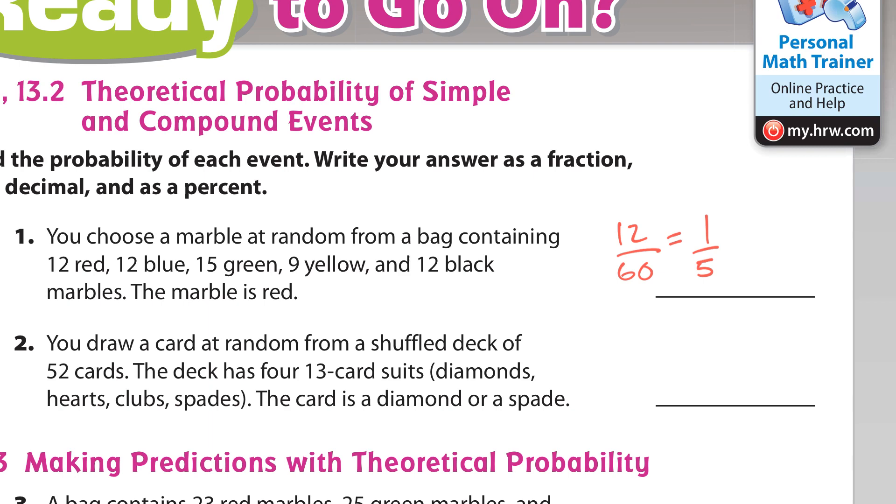And the next one, you draw a card at random from a shuffled deck of 52 cards. The deck has 13 suit cards. What is the probability that the card is a diamond or a spade? So there's 13 diamonds and 13 spades. That's a total of 26 out of the total of 52 cards. That simplifies to one half.